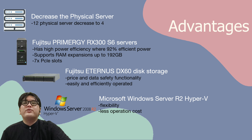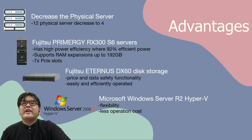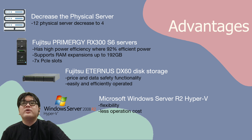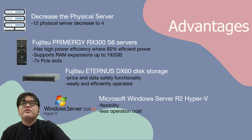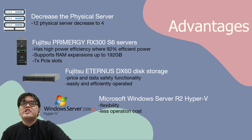Next, I will talk about the advantages of using the Fujitsu Primergy RX300 S6 server. One advantage is it has high power efficiency with 92% efficient power supplies. This model also supports up to 192 GB RAM expansion, which is very useful because it can make the system run smoothly. Besides that, there are also 7 PCIe slots available, so the local government can expand the storage based on their needs.